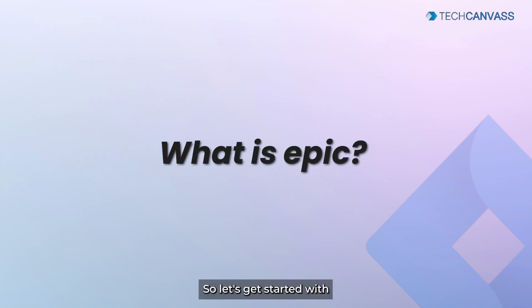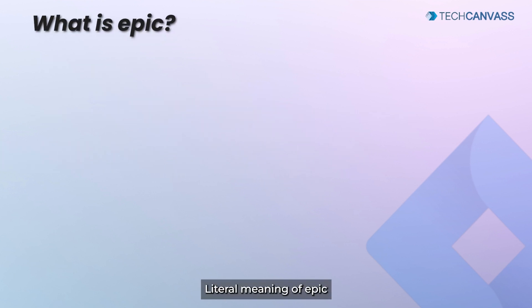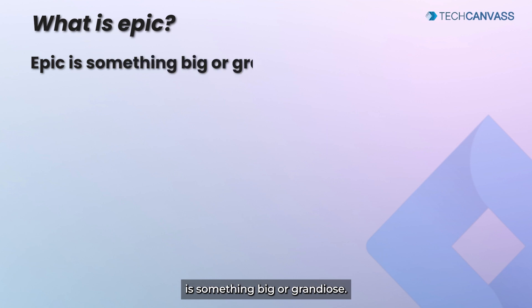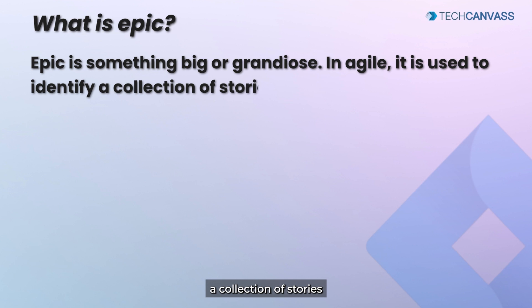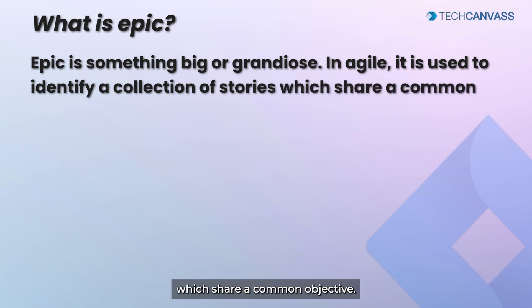Let us get started with what is an epic. The literal meaning of epic is something big or grandiose. In agile, it is used to identify a collection of stories which share a common objective.